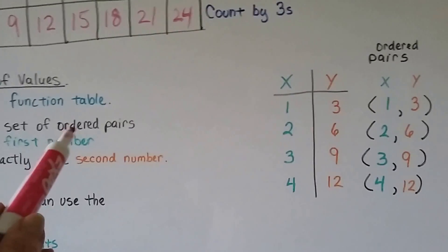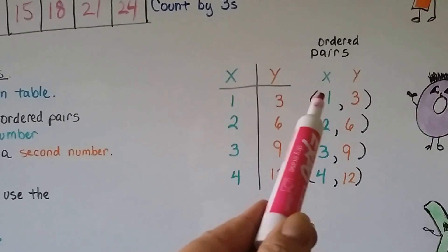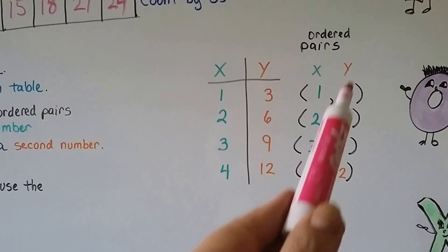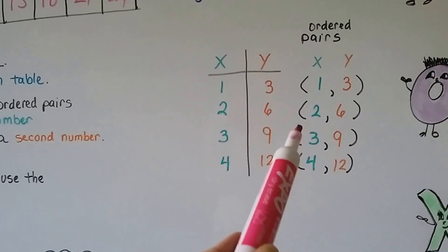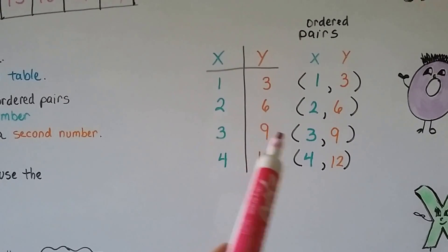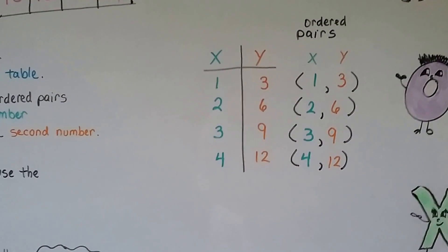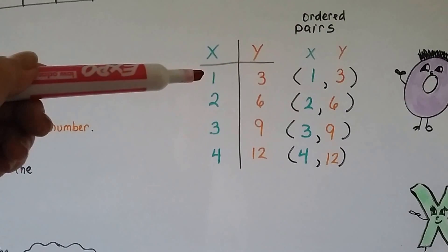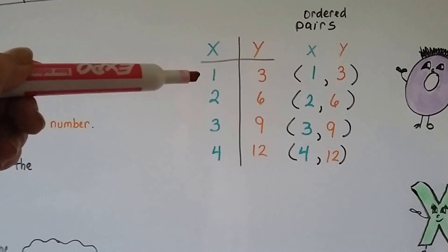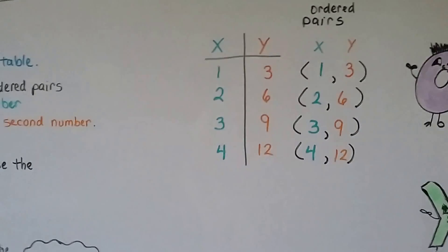We can write them as these ordered pairs. We always write the X value first and then the Y value. We'd have a one comma three, a two comma six. That's the ordered pairs. See how we're just taking it out of the table and putting them in parentheses with a comma in between them?